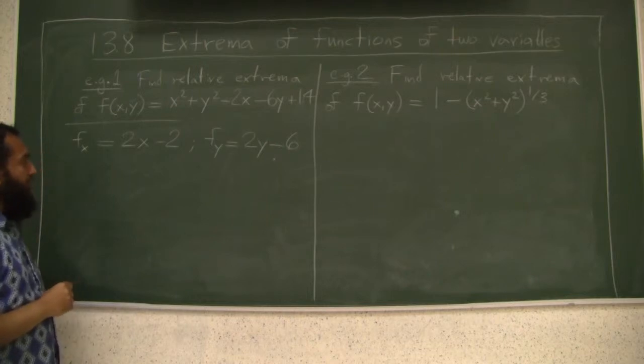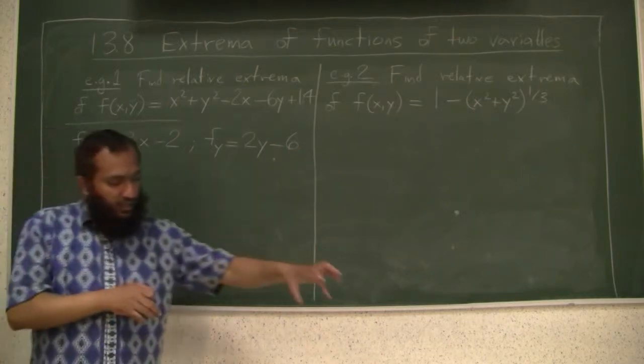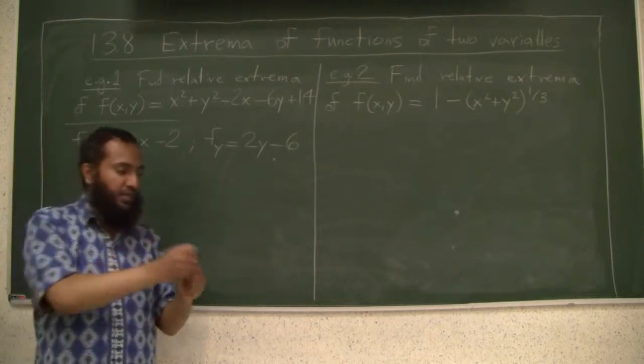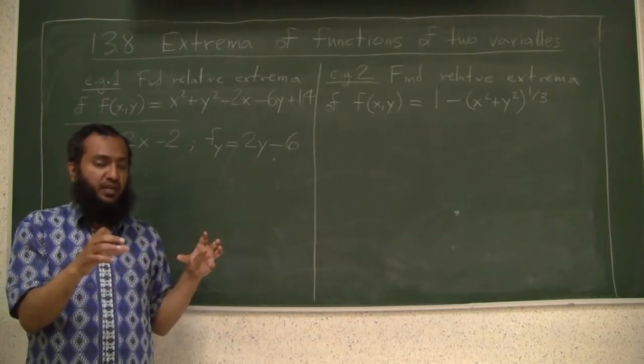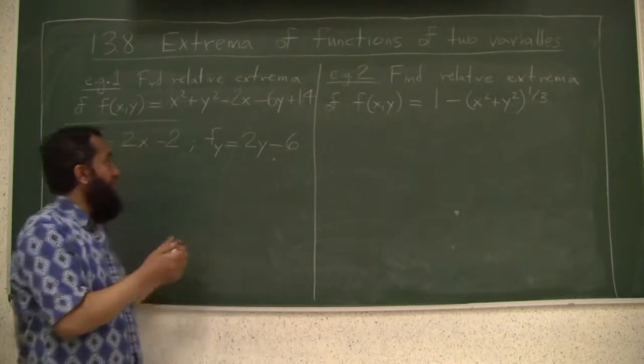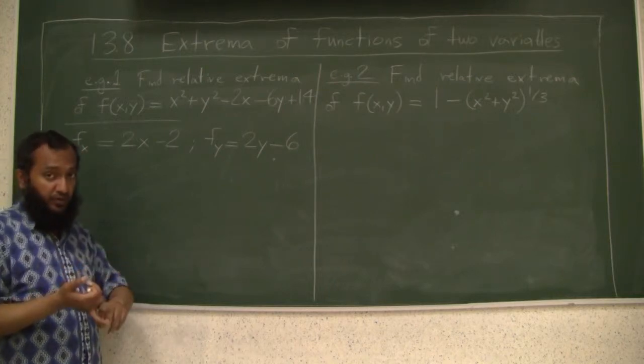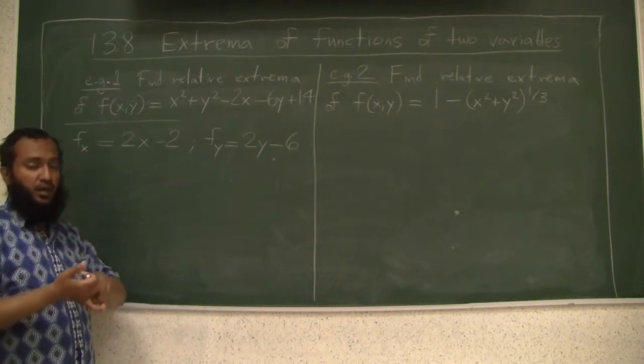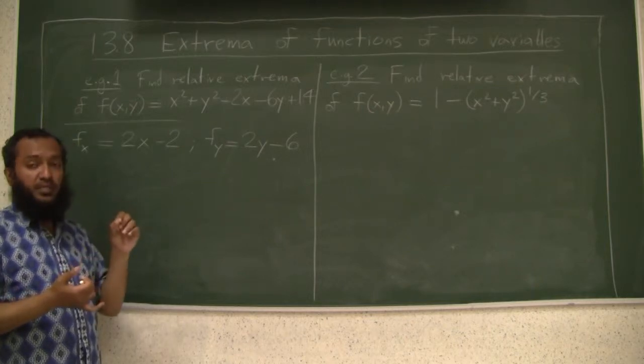And now remember, we will first extract all the critical points, just like a fisherman. You can take out all the critical points and then check if there are extrema or not, because there might be several points. What is the definition of critical points? Either both derivatives should be 0, the partials, or at least one of the partials does not exist.